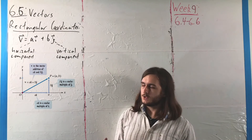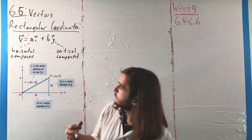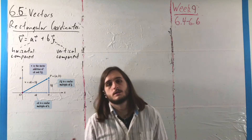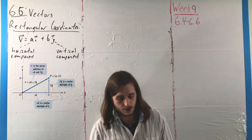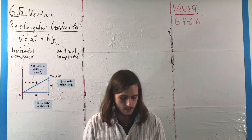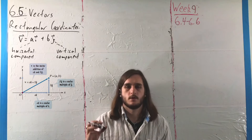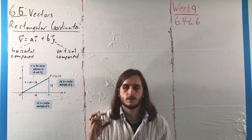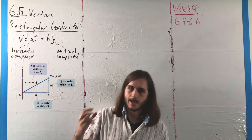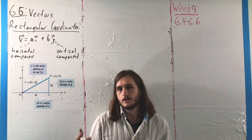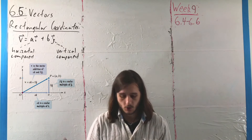The easiest way to get a sense for a vector in rectangular coordinates is to start by positioning it at the origin, talking about it as going from the origin at (0,0) to whatever point (A,B) it's trying to get to as its terminal point.